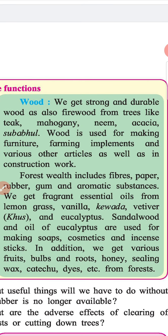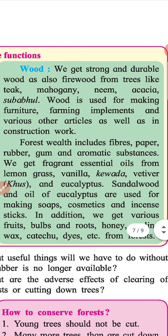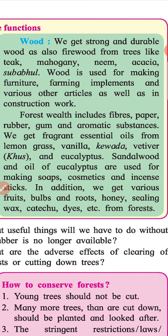Wood: We get strong and durable wood as also firewood from trees like teak, mahogany, neem, acacia, and subabul. Wood is used for making furniture, farming implements, and various other articles as well as for construction work. Forest wealth includes fibers, paper, rubber, gum and aromatic substances. We get fragrant essential oils from lemongrass, kevda, vetiver, khas, rose and eucalyptus. Sandalwood and oil of eucalyptus are used for making soaps, cosmetics and incense sticks.